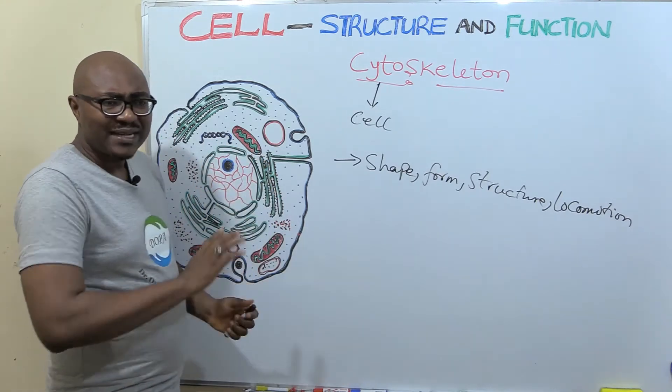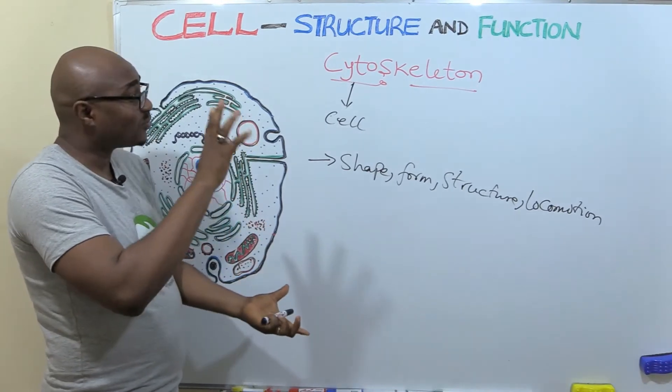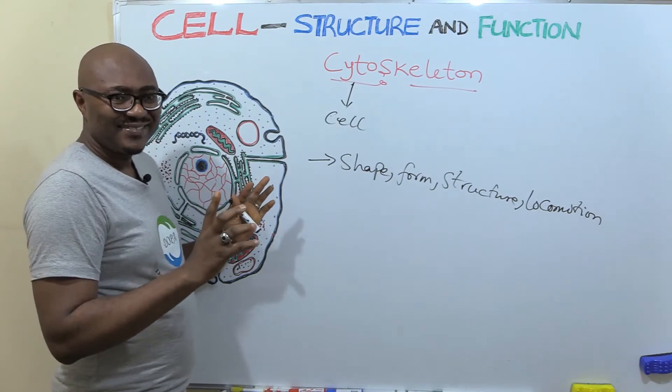So we're going to be looking at them. They are actually proteins, all of them are proteins. There are three basic types of cytoskeletal elements. We're going to be looking at them.